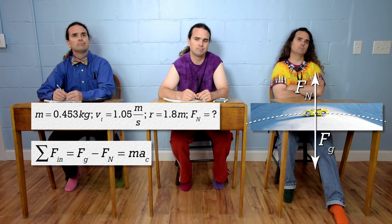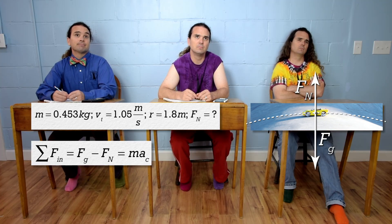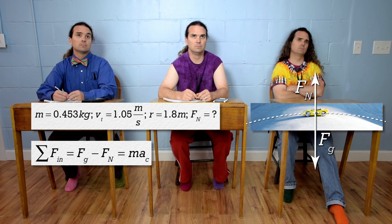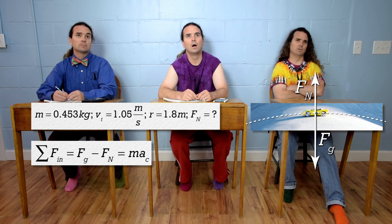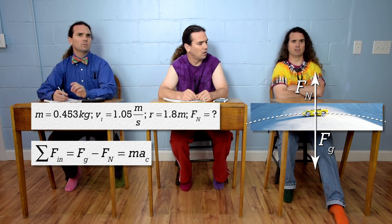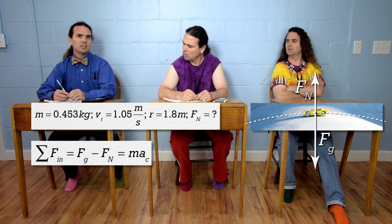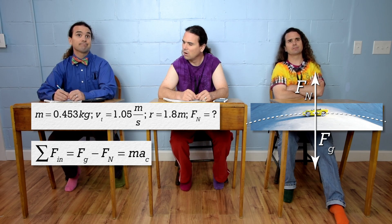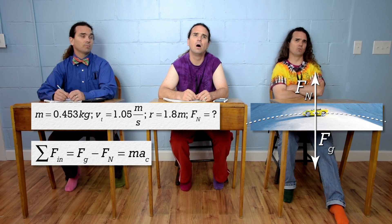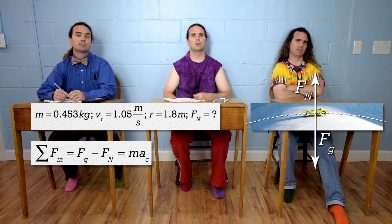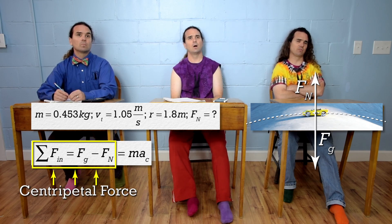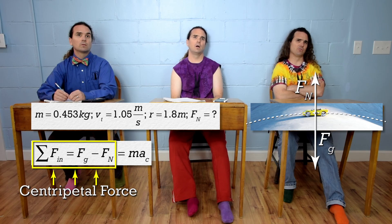Bo, in this example at the top of the hill, what is the centripetal force acting on the car? Isn't that just the force inward, so the force of gravity? No, the centripetal force is the net force in the in direction. Right, so the centripetal force or the net force in the in direction is the force of gravity minus the force normal.